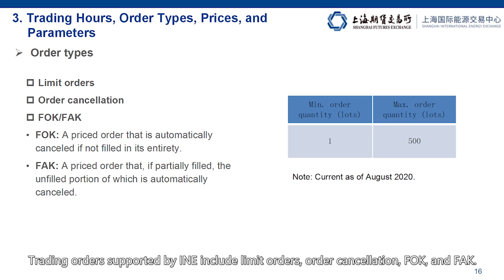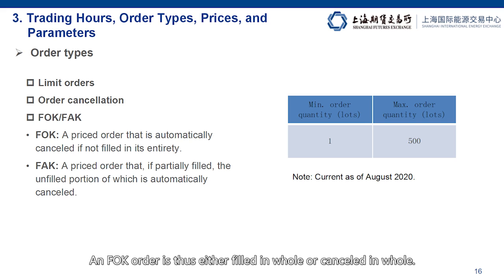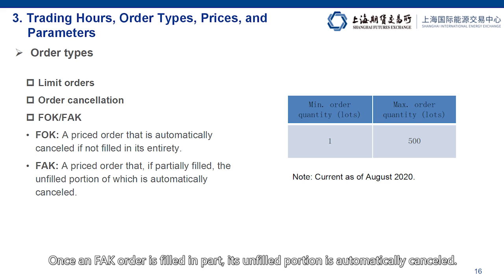Trading orders supported by INE include limit orders, order cancellation, FOK and FAK. FOK, short for fill or kill, indicates an order with a specified price that is automatically cancelled if not filled in its entirety — an FOK order is thus either filled in whole or cancelled in whole. FAK, short for fill and kill, indicates an order with a specified price that if partially filled, the unfilled portion is automatically cancelled. An order can be anywhere between one lot and 500 lots.